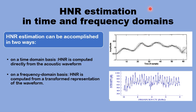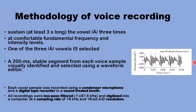The method to obtain a high-quality voice signal sample for analysis and computations is through using a condenser microphone and a digital recorder in a sound-treated booth or quiet room. The subject is asked to sustain the vowel A for more than three seconds and do it three times at a comfortable fundamental frequency and intensity level. One of these three samples is chosen, and out of the three-second sample, only a stable 200-millisecond segment is required after visually inspecting the signal.